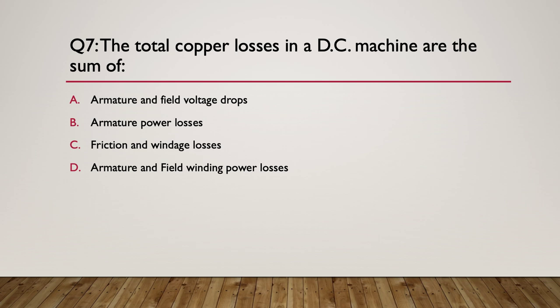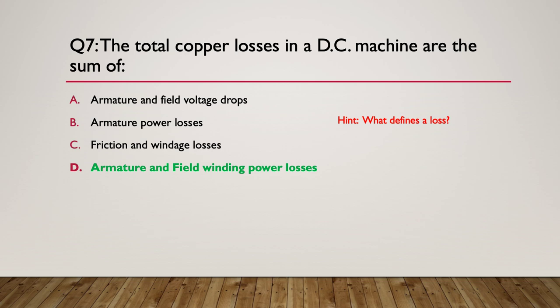Question seven: the total copper losses in a DC machine are the sum of what? A: armature and field voltage drops. B: the armature power losses. C: the friction and windage losses. Or D: the armature and field winding power losses. Pause here. Here's your hint — what defines a loss? Think about what creates a loss. In this particular case, what are the losses in the copper? So the armature and field winding power — remember, anything where there's a copper wire which has got internal resistance, that's where you're going to get copper losses.